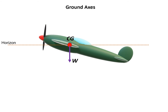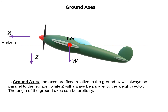The second commonly used axis is the ground axis, which is easier to understand. The aircraft has a center of gravity with weight W. In the ground axis, x always follows the horizon line, z is perpendicular to x pointing downward parallel to the weight vector, and y follows the right-hand system pointing into the screen. The axes are fixed relative to the ground, and the origin of the ground axis can be arbitrary — it does not need to be at the center of gravity, unlike the aircraft axis.